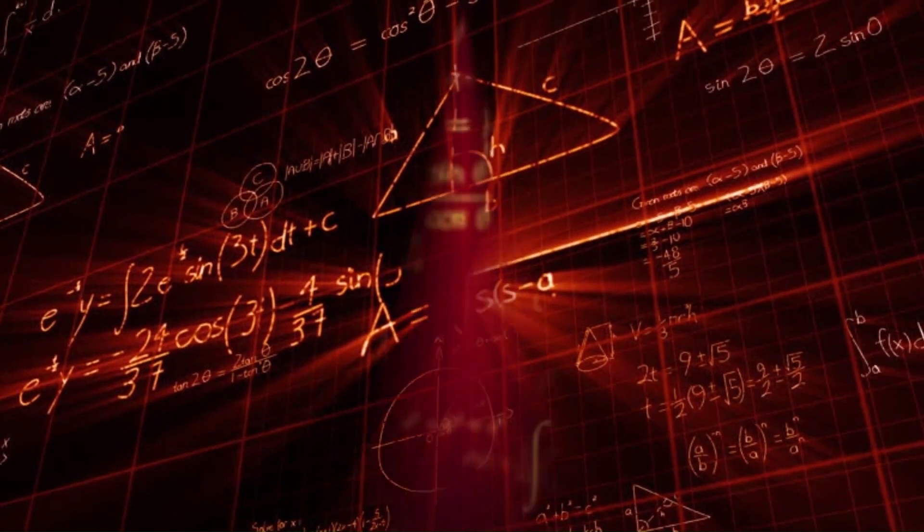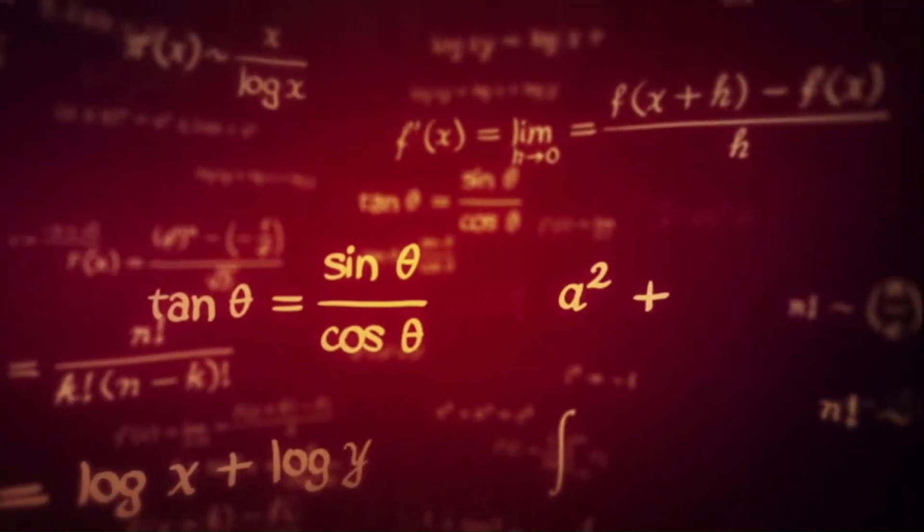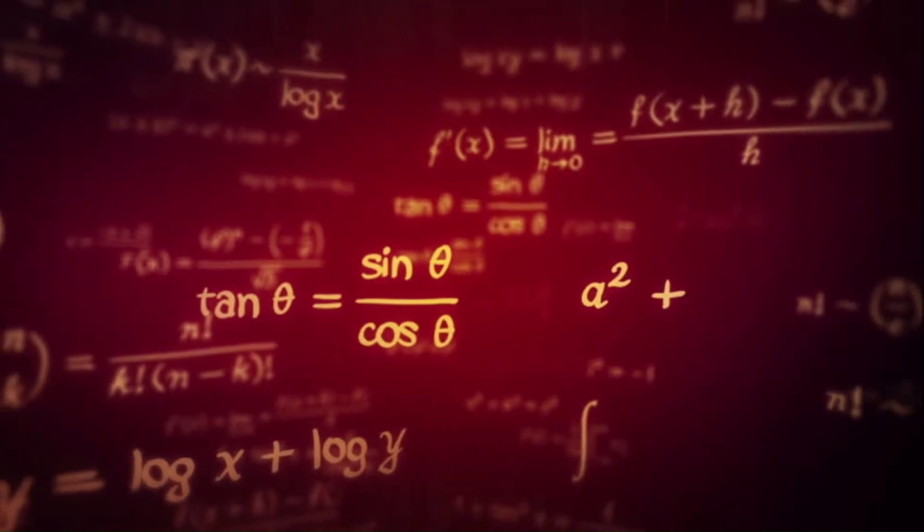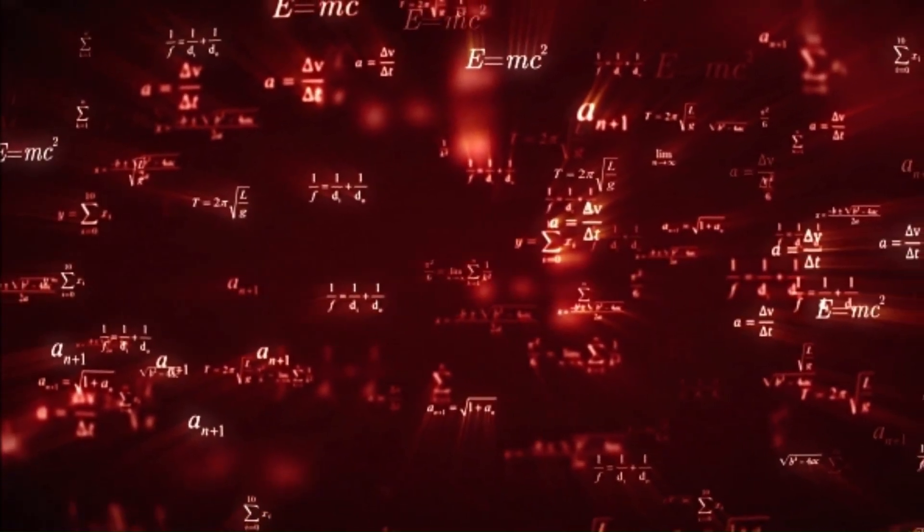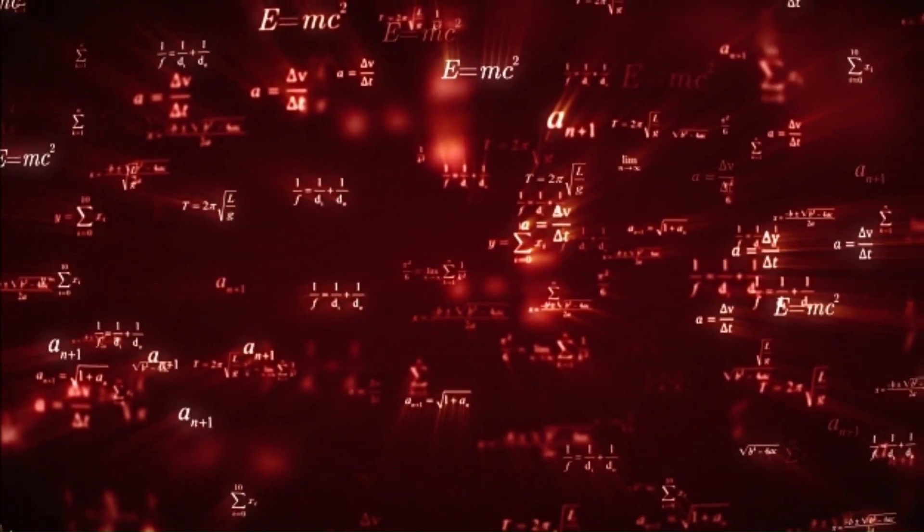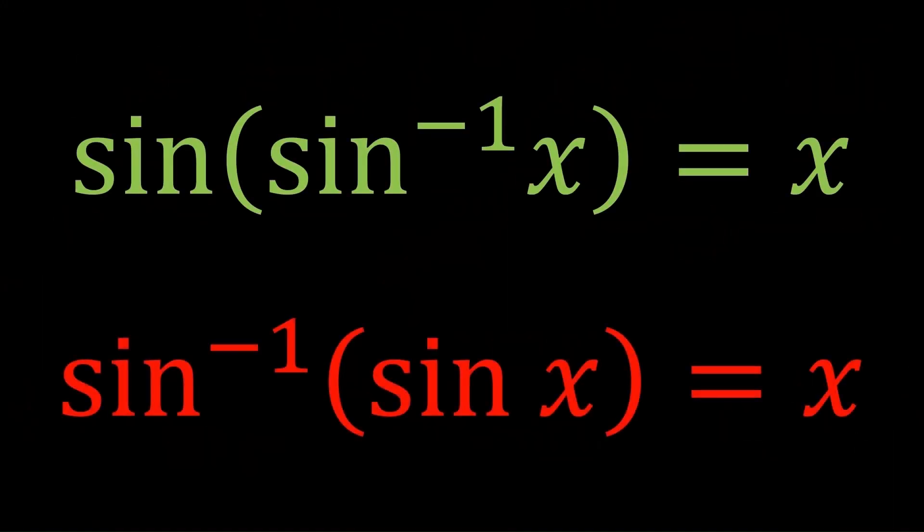The trigonometric functions are remarkably useful. They show up everywhere, in calculus, complex numbers, and even physics. But there is one problem. For example, sine of sine inverse x is x, but sine inverse sine x is not x. What on earth is going on here?